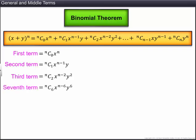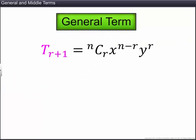The seventh term is nC6 into x raised to the power n minus 6 into y raised to the power of 6. Likewise, the r plus one-th term is nCr into x raised to the power n minus r into y raised to the power of r. This is known as the general term of the expansion. With the help of this formula, you will be able to find any term in the expansion.